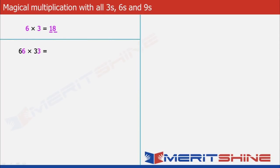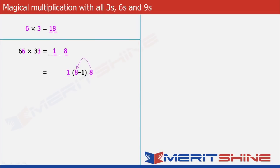Now let us try 66 × 33. Again, it would be very similar to what we have learnt in previous examples. We will put down the answer of 6 × 3, which is 18, and then add 1 blank each to the left of 8 and 1. The next step would be to decrease 8 by 1 and write it to the left of it, and then increase 1 by 1 and write it to the left of it, thereby giving us our final answer as 2178.